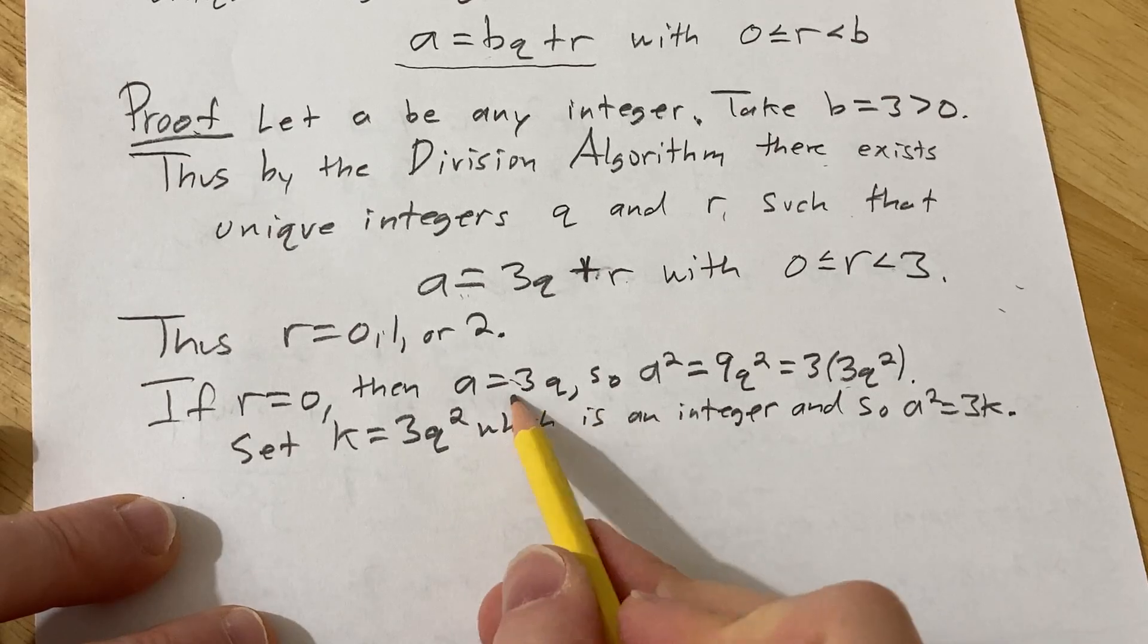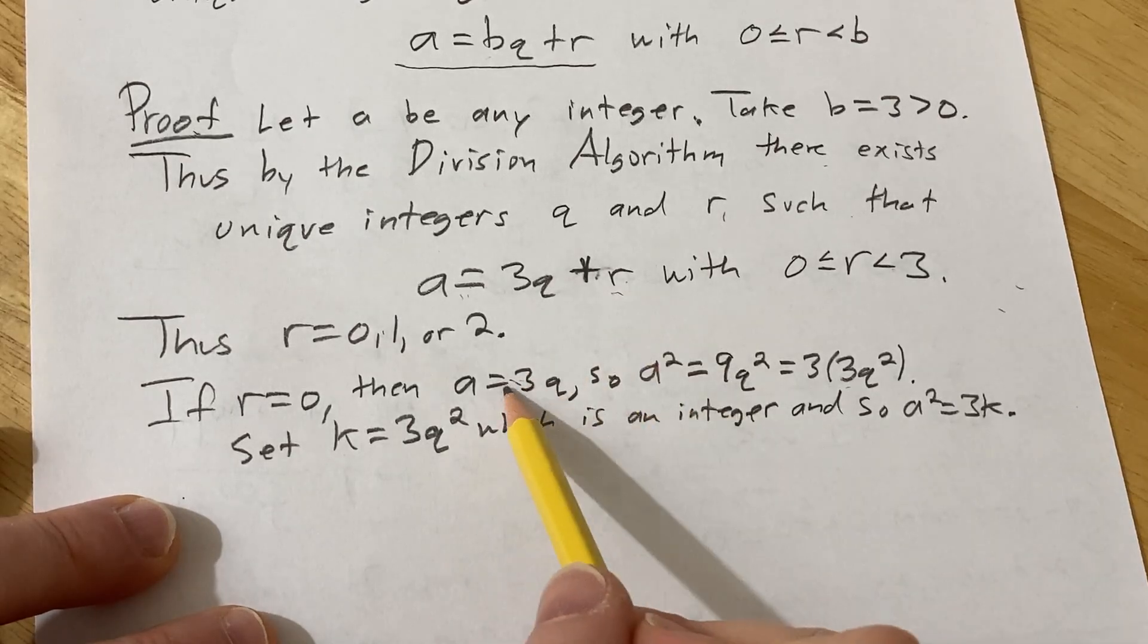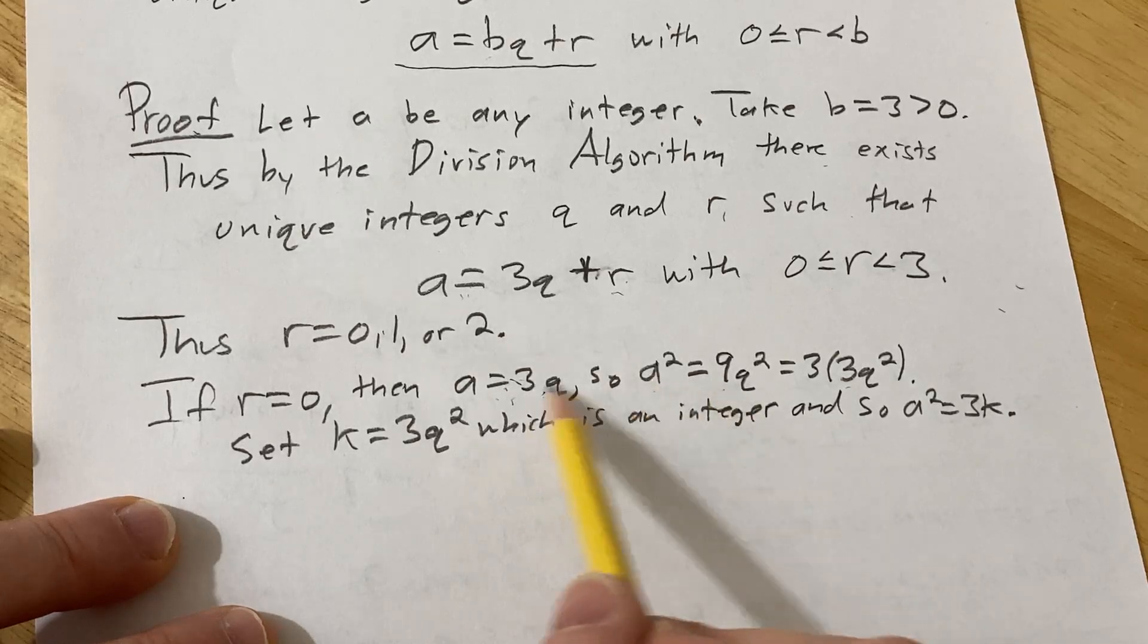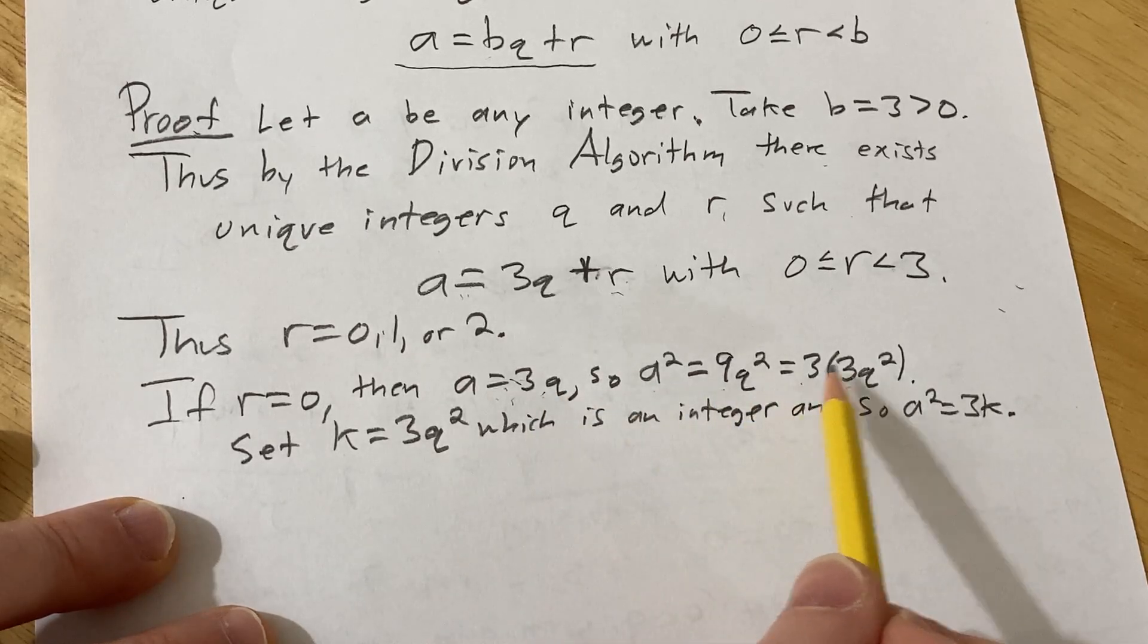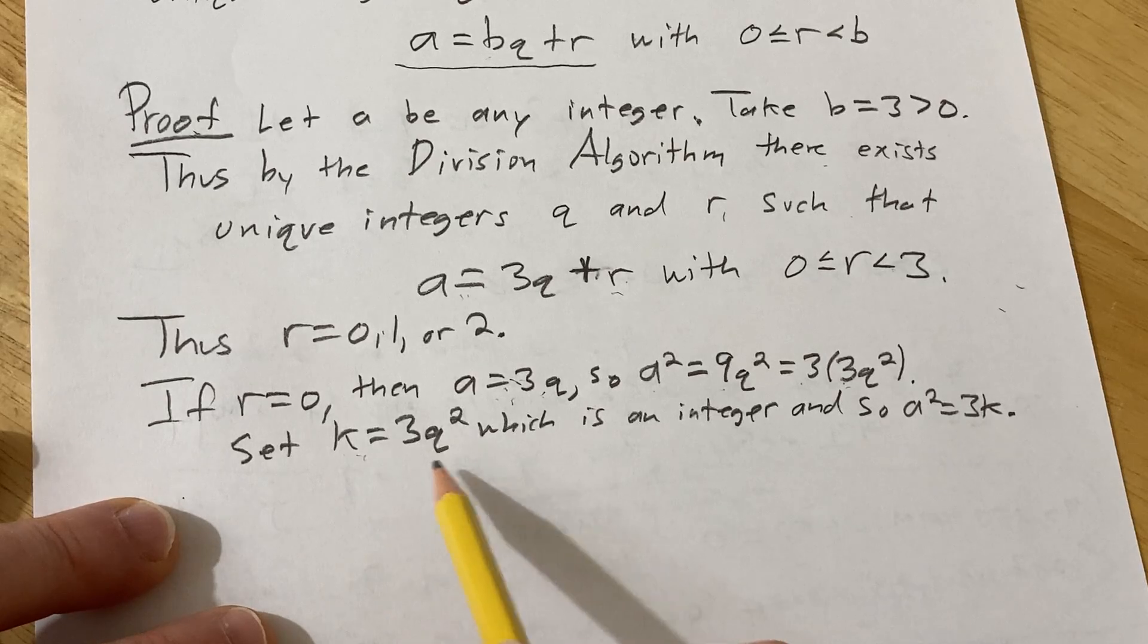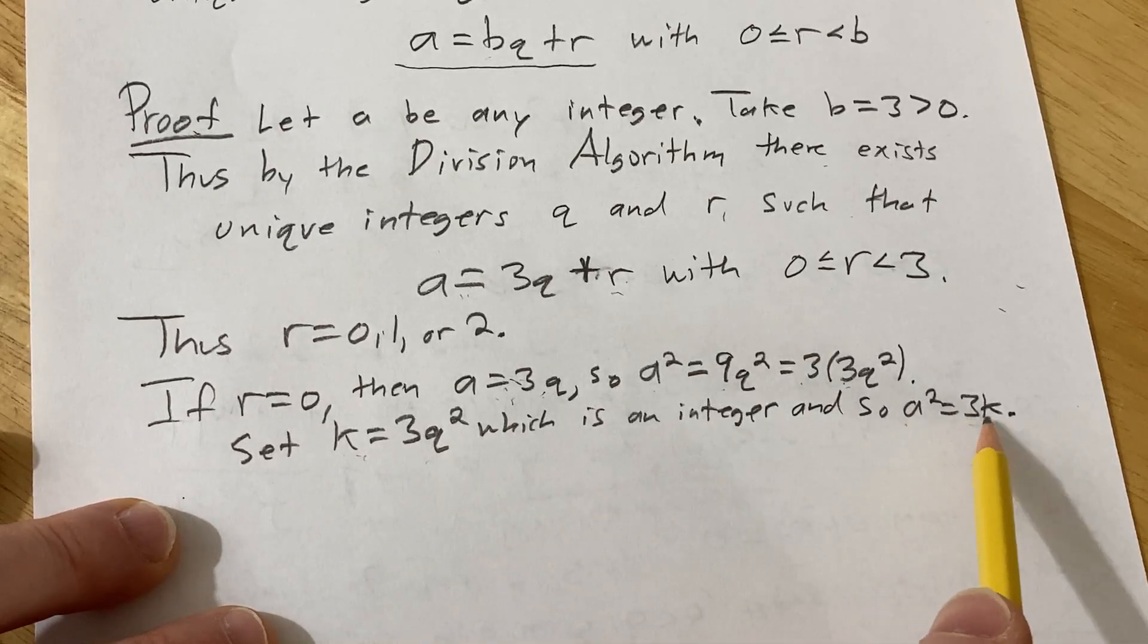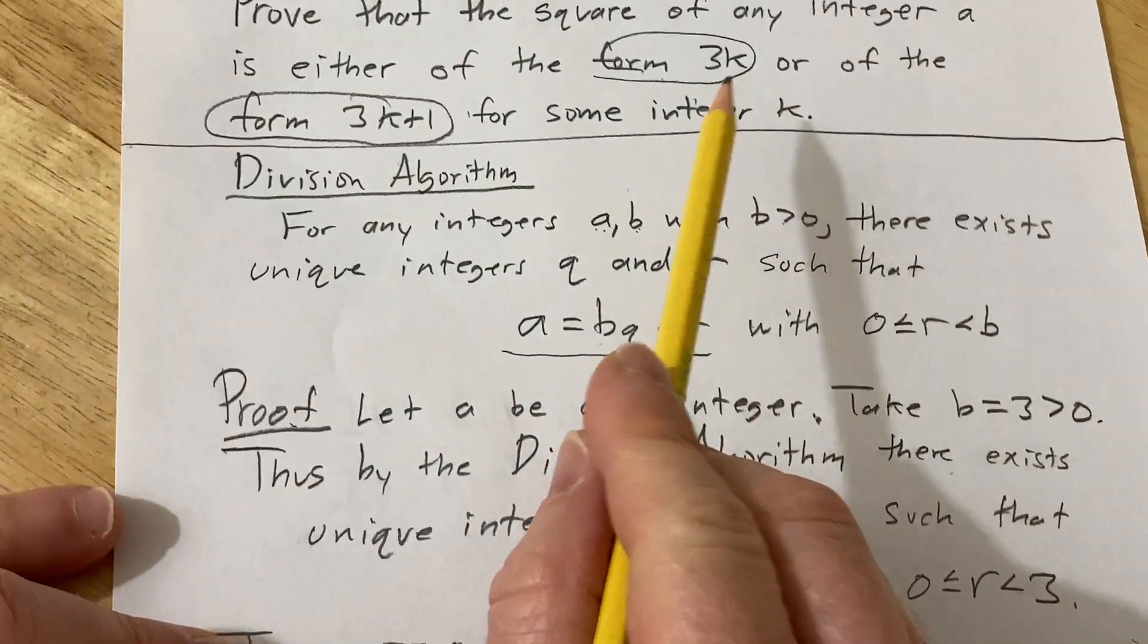So if r is 0, we took r plugged into our equation and we got a equals 3q. We squared both sides of this equation and we wrote it as 3 times an integer. So k is an integer and so a squared is equal to 3k. So that meets one of the criteria.